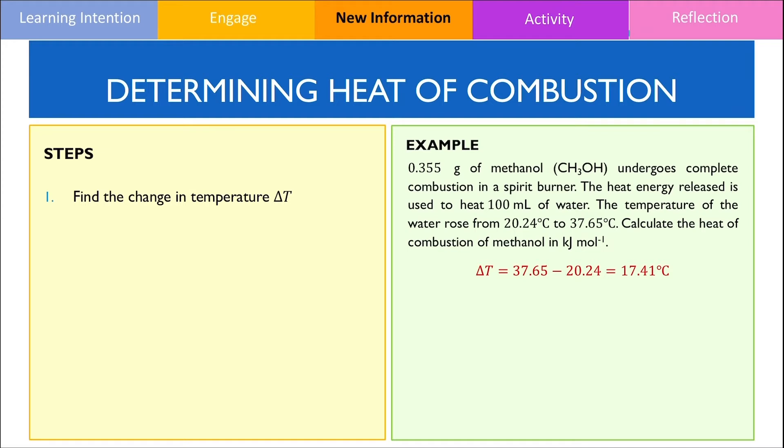From here, we can now calculate the energy absorbed by water by using this formula. M represents the mass of water, and since we know that 1 ml equals to 1 gram, therefore 100 ml of water has a mass of 100 grams. Plug in all the values, and we should therefore get an answer equal to 7277 joules of energy.